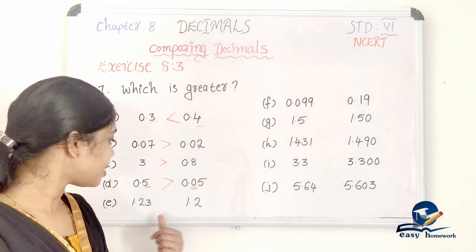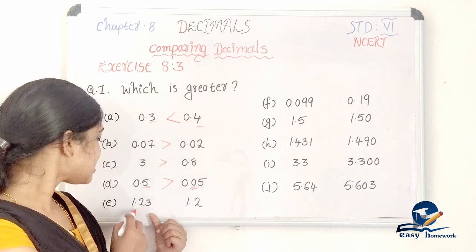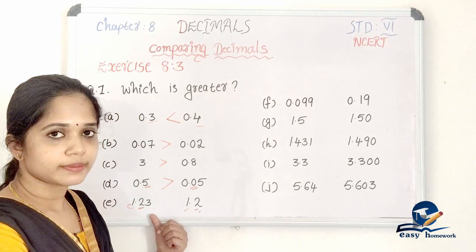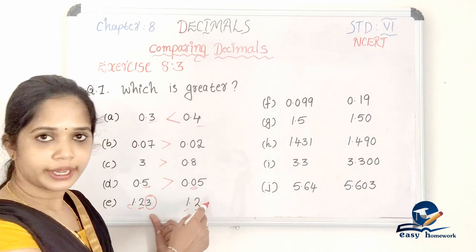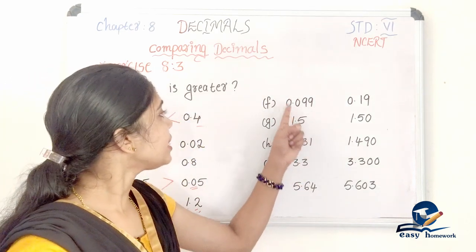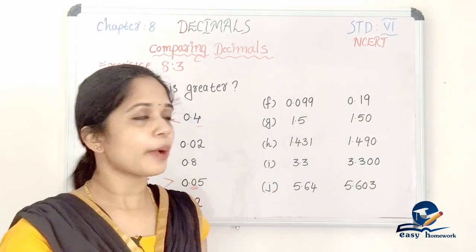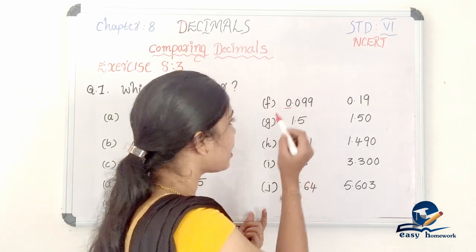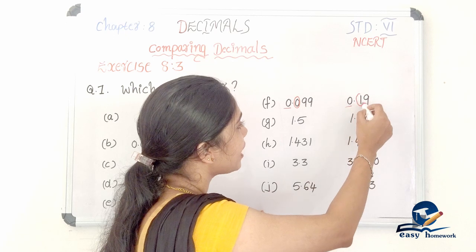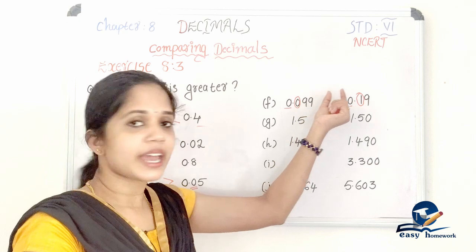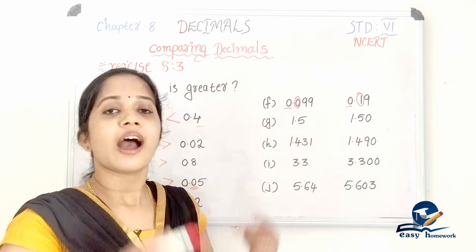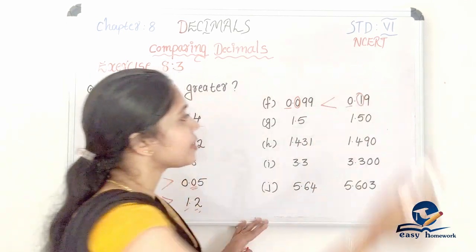Next, we compare 1.23 and 1.2. Left side: 1 and 1 — equal. Tenths place: 2 and 2 — equal. Hundredths place: 3 and 0. So 1.23 is greater. Next, compare 0.099 and 0.19. Left side: 0 and 0 — equal. Compare tenths place: 0 and 1. Since 1 is greater, 0.19 is greater.